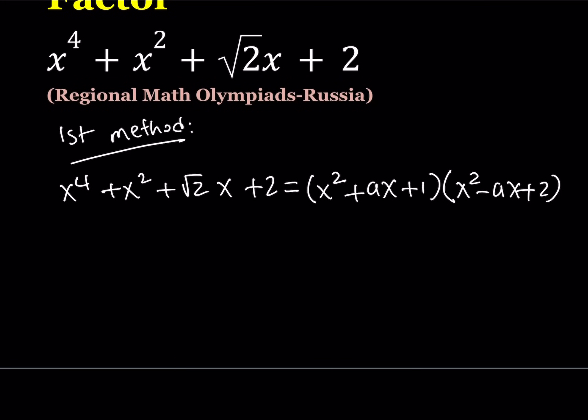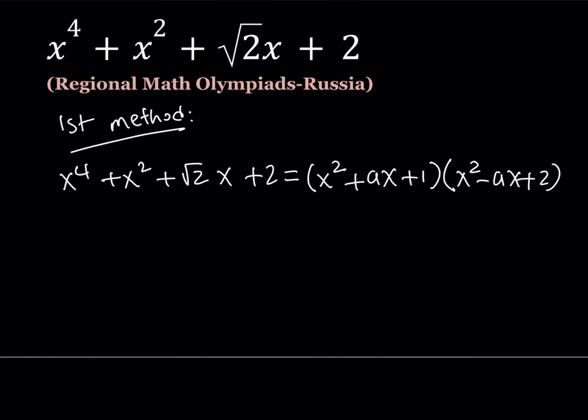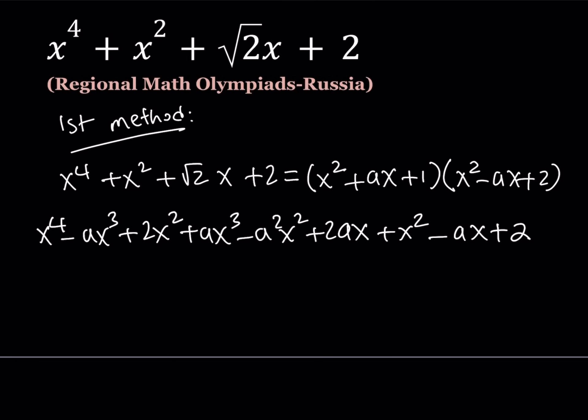So, let's go ahead and distribute the right-hand side and let's see what we get from there. When you multiply, it's going to give you x to the fourth power and then minus ax cubed. Just go ahead and distribute everything: 2x squared plus ax cubed minus a squared x squared plus 2ax plus x squared minus ax plus 2. Let's simplify this.